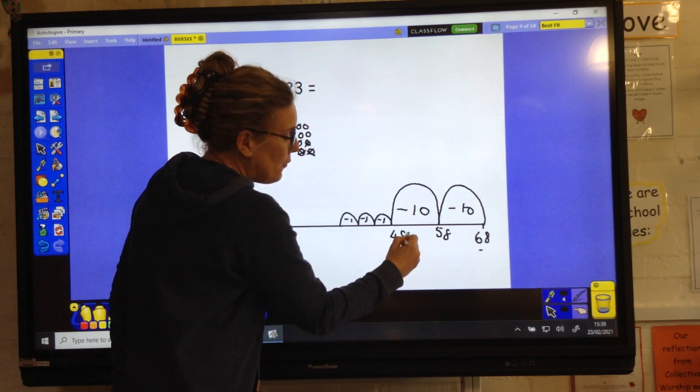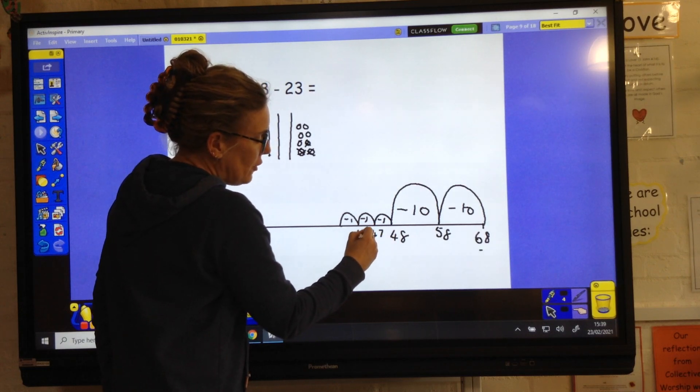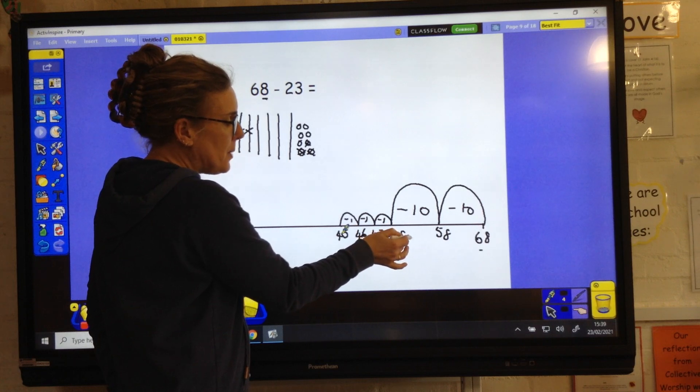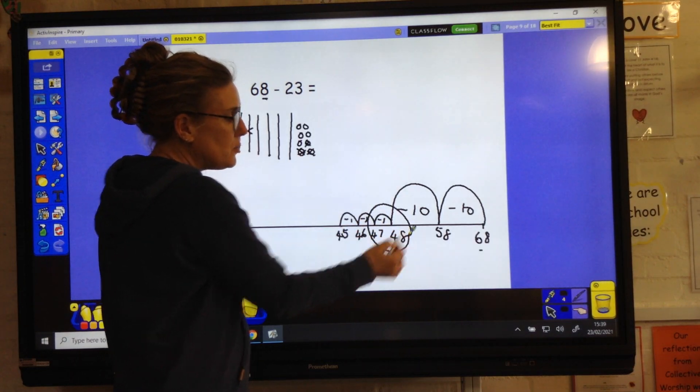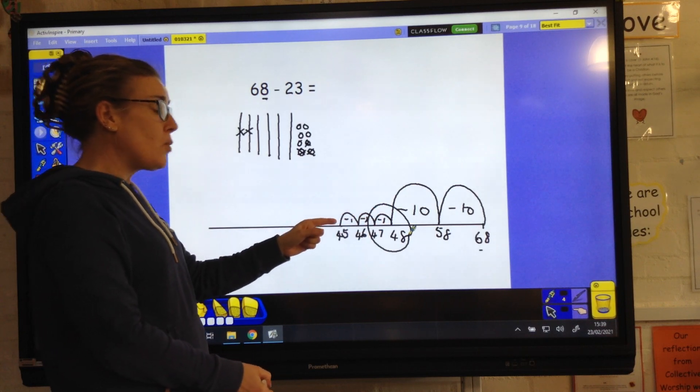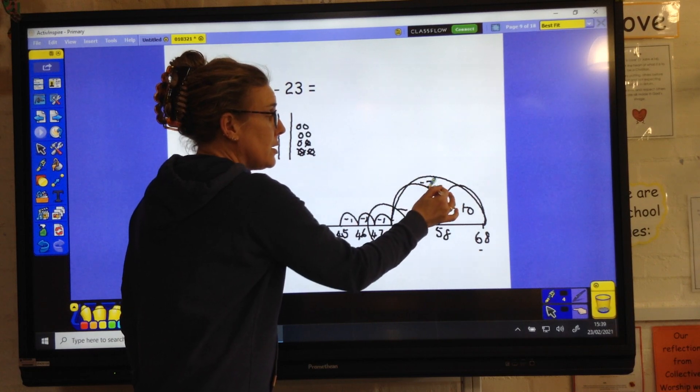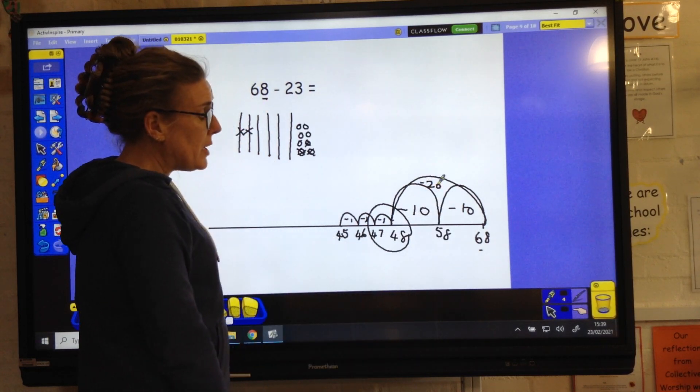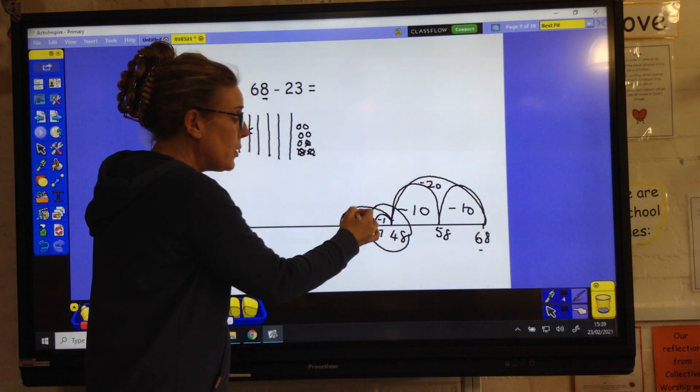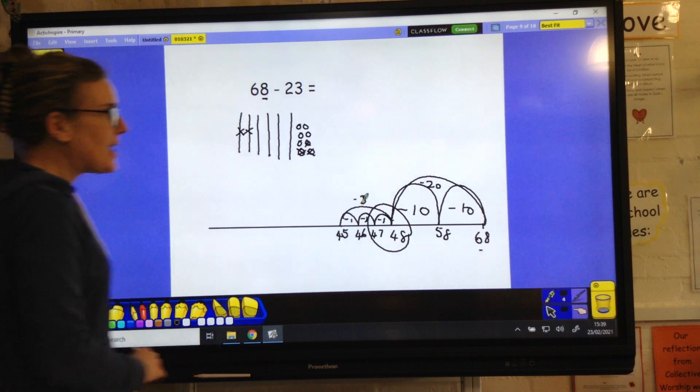We are counting back. So we've got 68, 58, 48. Then we've got 47, 46, 45. If you're using a number line, this is the place to watch out when it swaps from counting back in tens to counting back in ones. You can do number lines in different ways. You might want to jump back in a big jump of 20. It doesn't matter how you do that as long as we're accurate and we get the right answer.